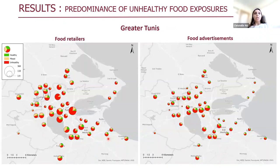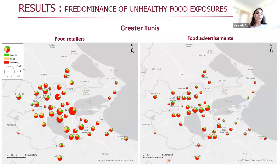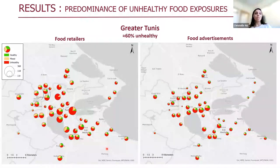Starting with Greater Beirut: in the map, each circle indicates a school, and the size of the circle is proportionate to the density of food retailers or food advertisements — a bigger circle indicates higher density. Different colors indicate the types: red indicates unhealthy, orange mixed, and green healthy. On the right we have food advertisements and on the left food retailers. We can clearly see that the predominant color in both maps is red, underlining the massive predominance of unhealthy retailers and advertisements. In total, 60% of retailers and advertisements were labeled as unhealthy in Greater Beirut.